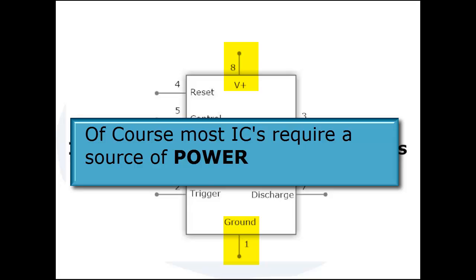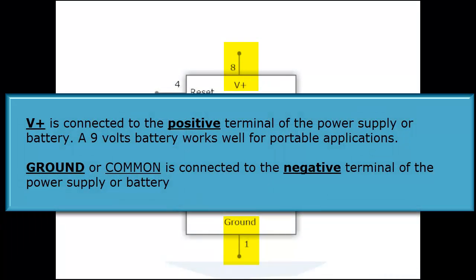And of course all ICs require a source of power. And so we have V plus and ground hooked to pin 8 and pin 1. And remember this is for the 8 pin dip only. Usually a 9 volt battery works well to power this device.